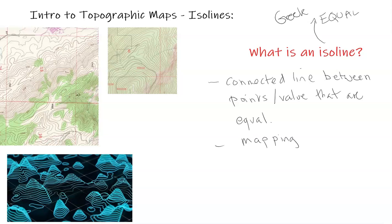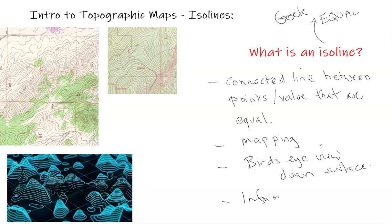We are usually looking at the map from an aerial view or bird's eye view — looking down onto the Earth's surface. ISO lines can tell us information about the surface, and a wide range of ISO lines are used to explain different kinds of information.